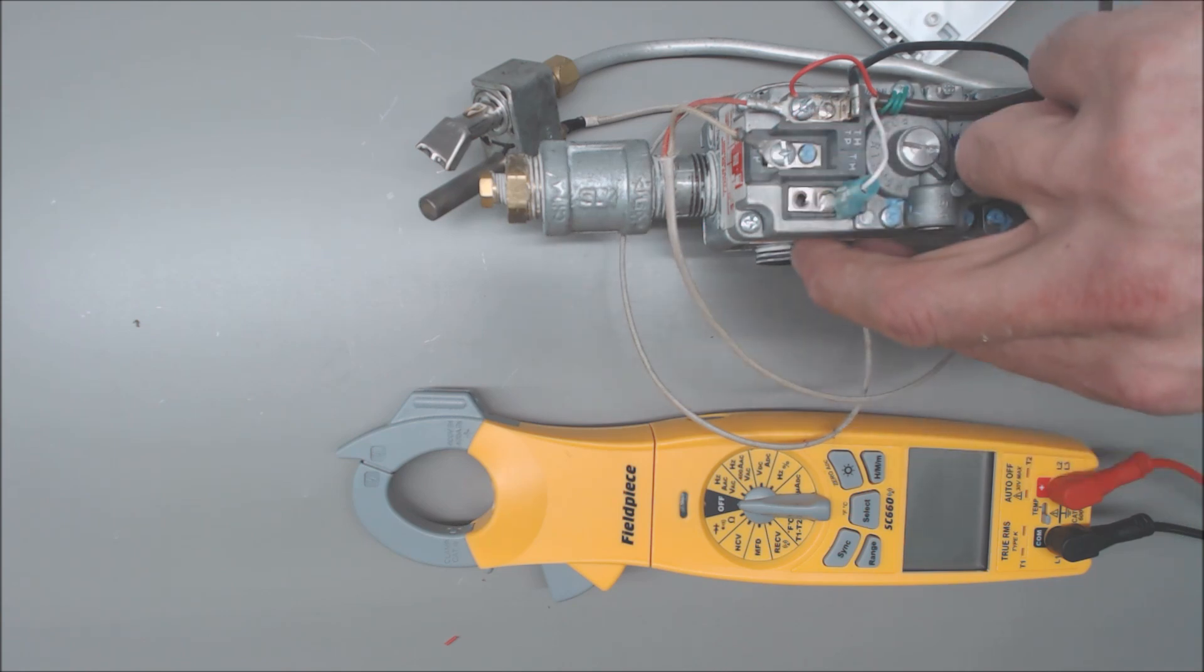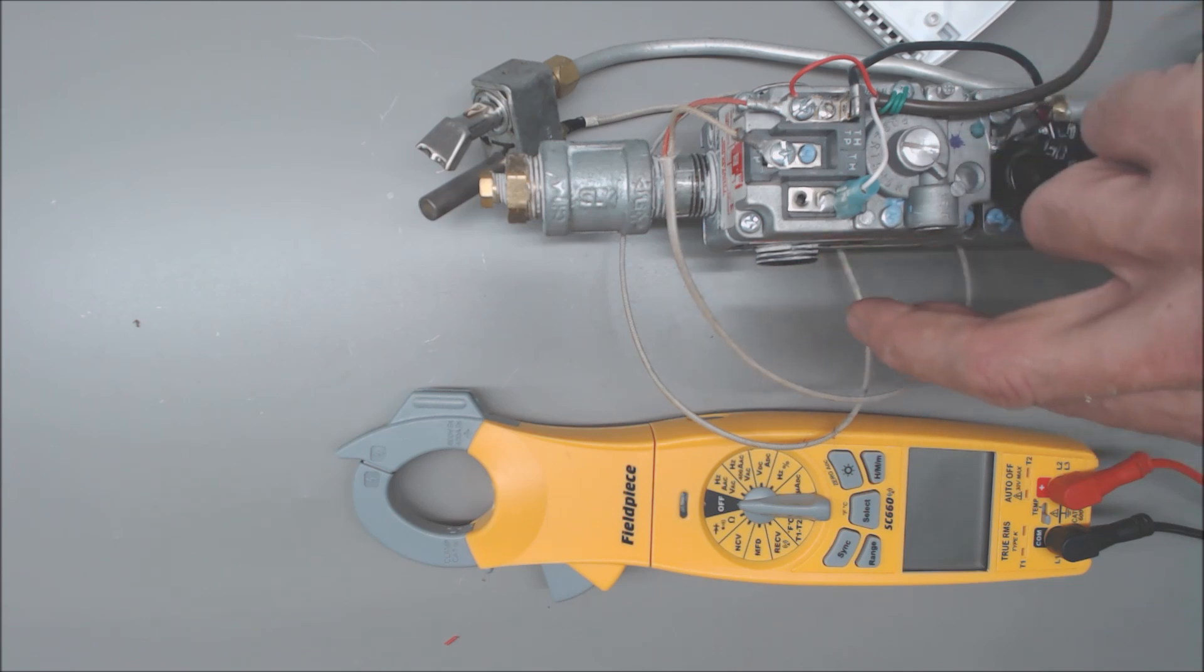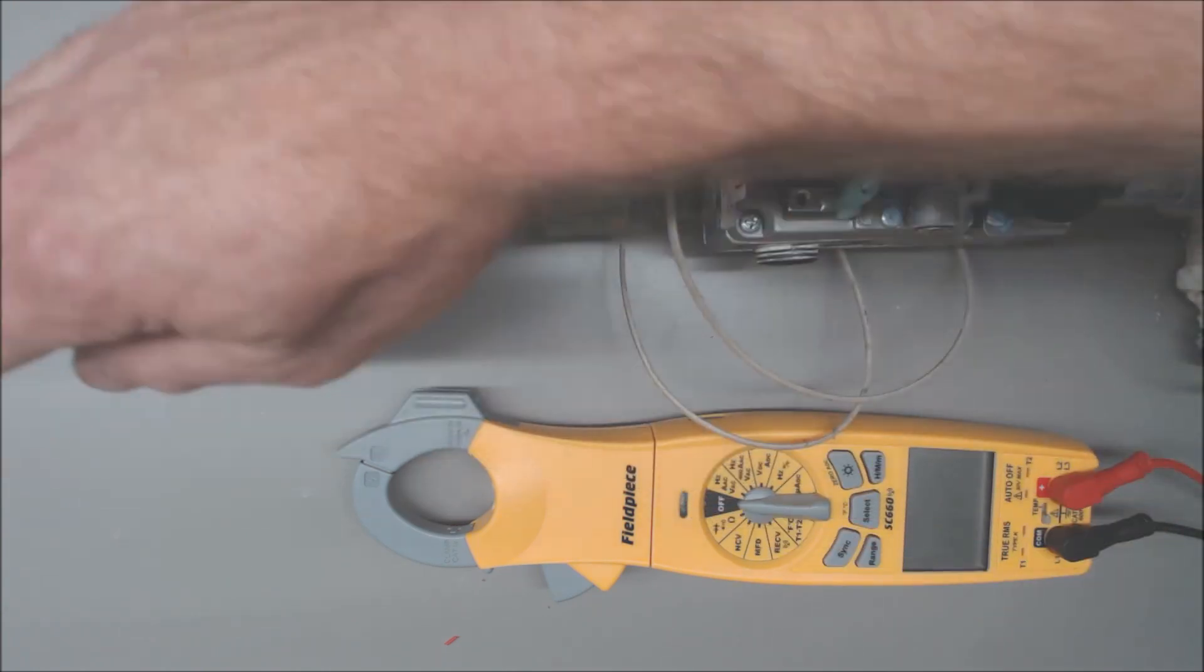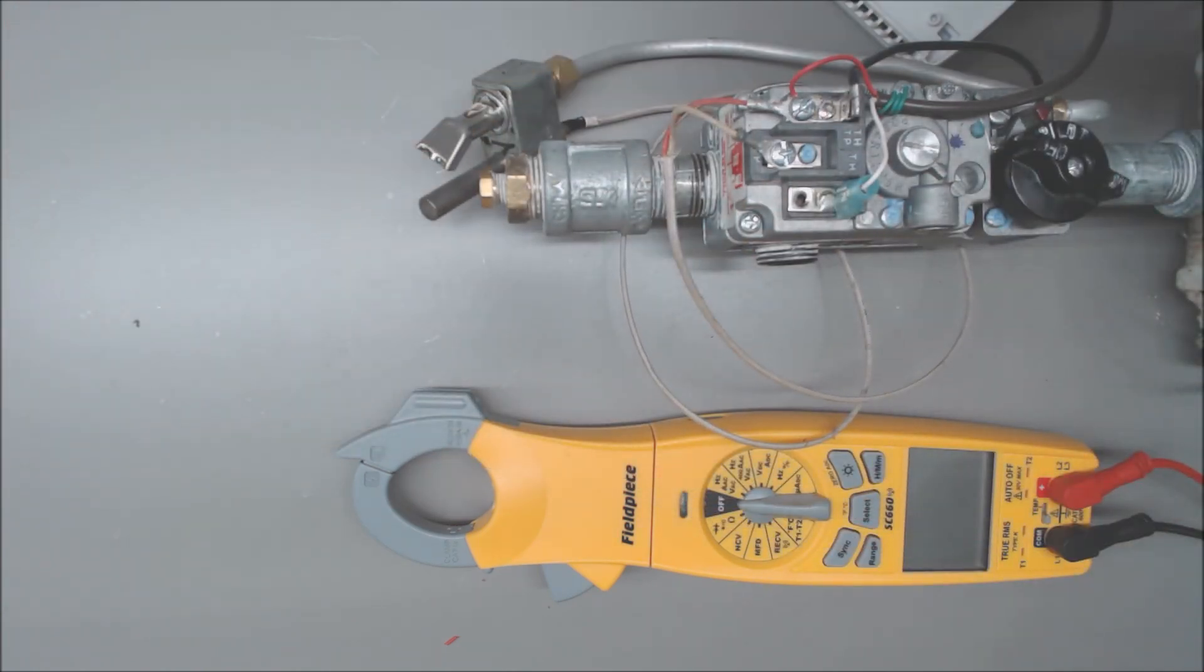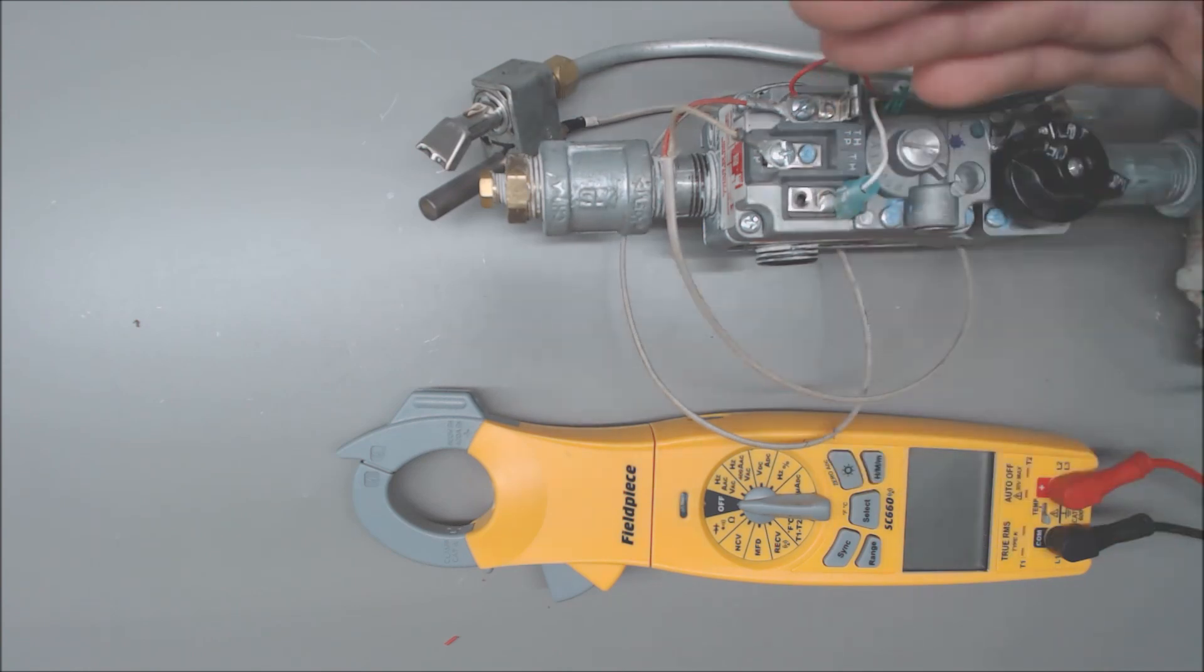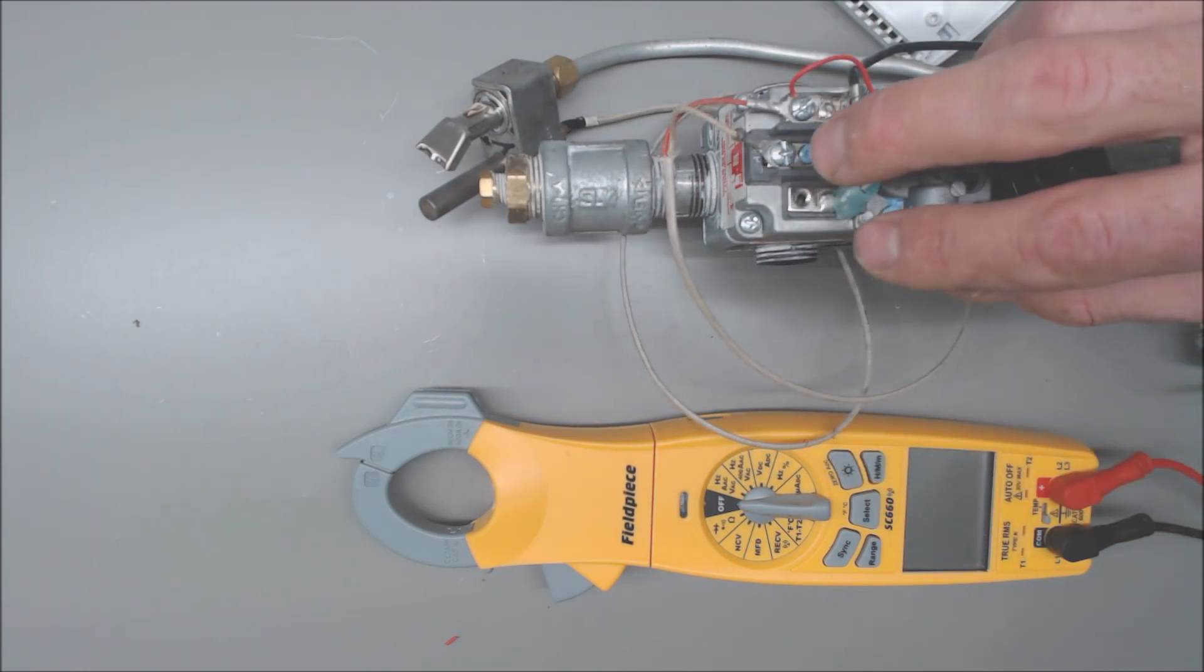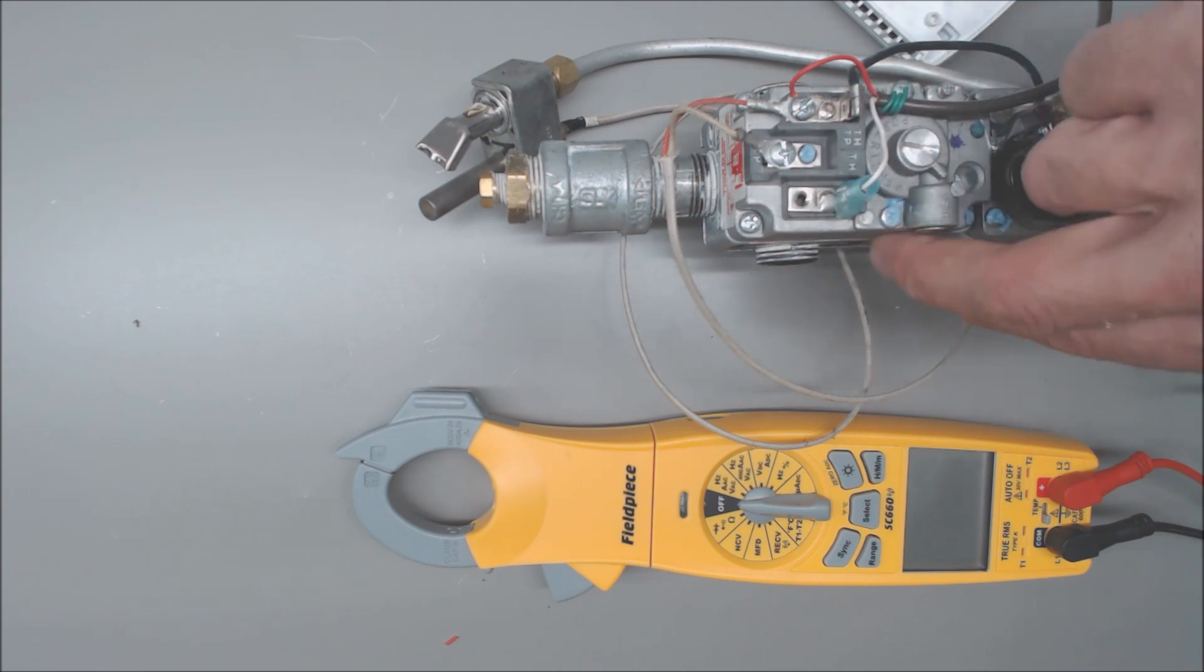190 millivolts would be the cutoff; that would be pretty low in order for your gas valve to allow the full flame to flow through. We always figure about 190 to 250 millivolts DC is basically what we need for a standard millivolt gas valve in order to open up.